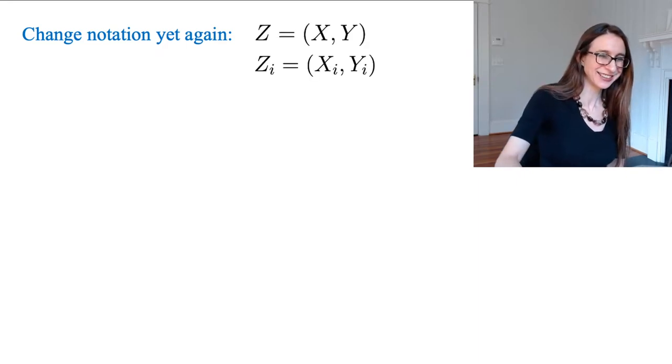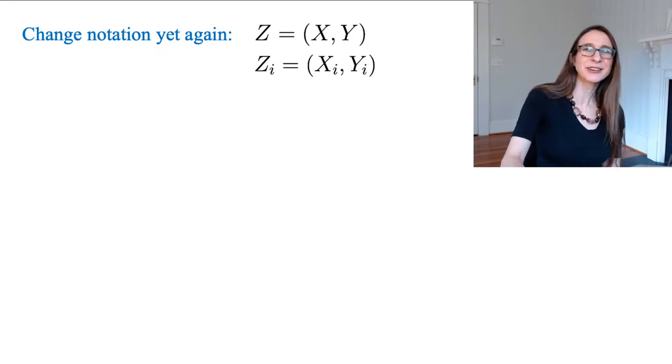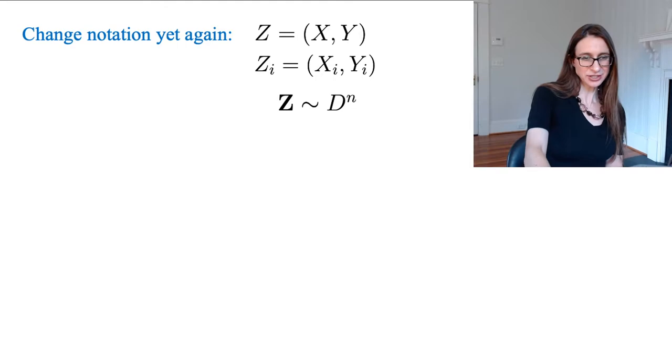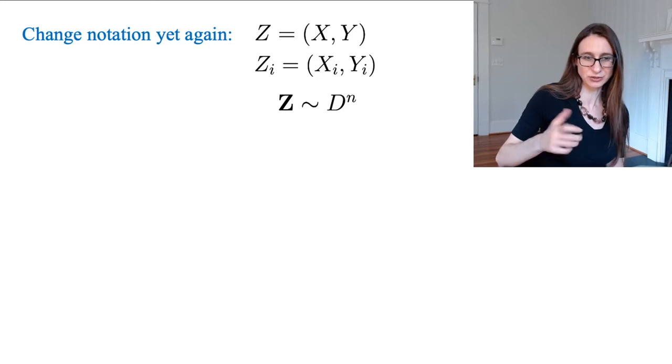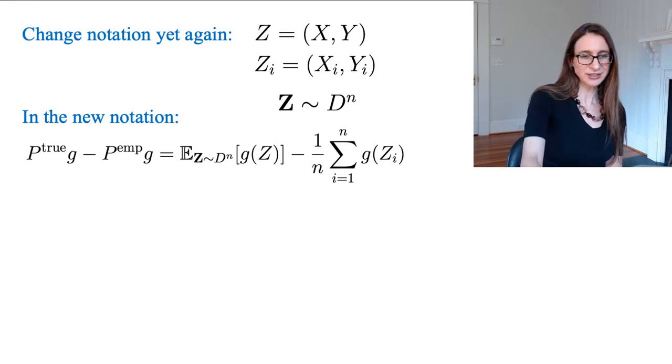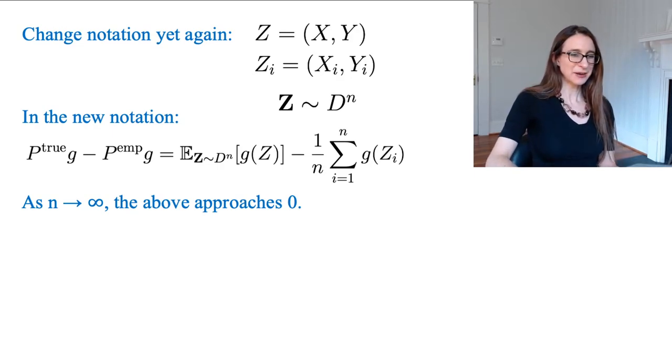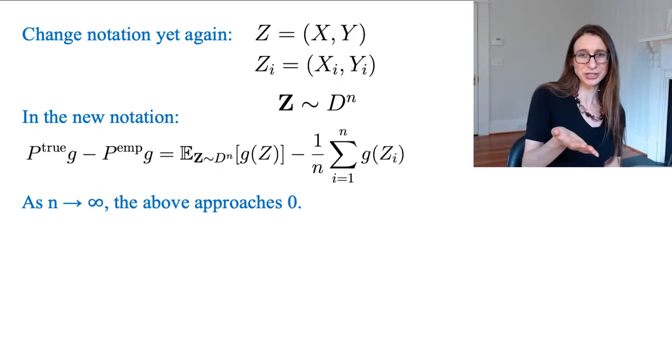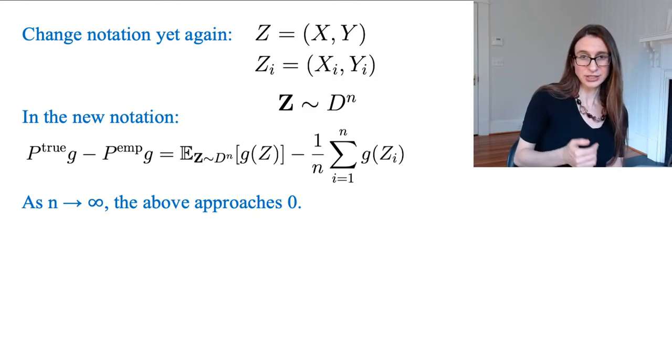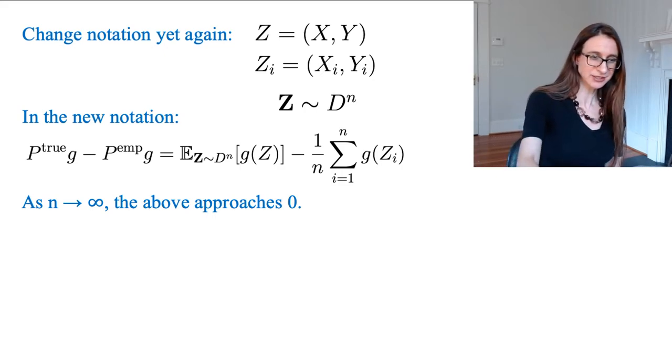Keep changing notation. Now, instead of dragging x and y around, I just wanted to drag z around. So x and y together, that's z. And then this notation here, this bold Z, that means we drew n points randomly from the distribution D on X cross Y. So bold Z is our data set. So in the new notation, the difference between the true risk and the empirical risk looks like this. At this point, you can see very clearly that it's just the difference between an expectation and an average. And so you would expect that as n goes to infinity, this quantity goes to zero. And any number of bounds from the world of statistics can tell you that.